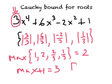And that tells us that all of our roots lie between minus 3 and 3. And this is the Cauchy bound right here, this interval.